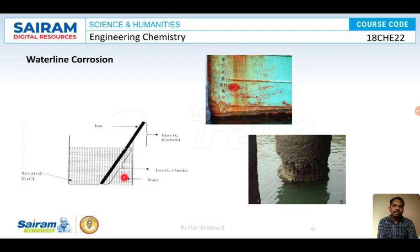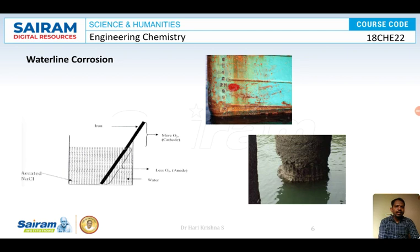Waterline corrosion is observed in ships, bridges, and water tanks. You can see in the diagram how corrosion occurs just below the water level on a ship. In steel water tanks, corrosion occurs just below the water line while the area above is protected. Waterline corrosion is also seen in oil pipelines and water pipelines.